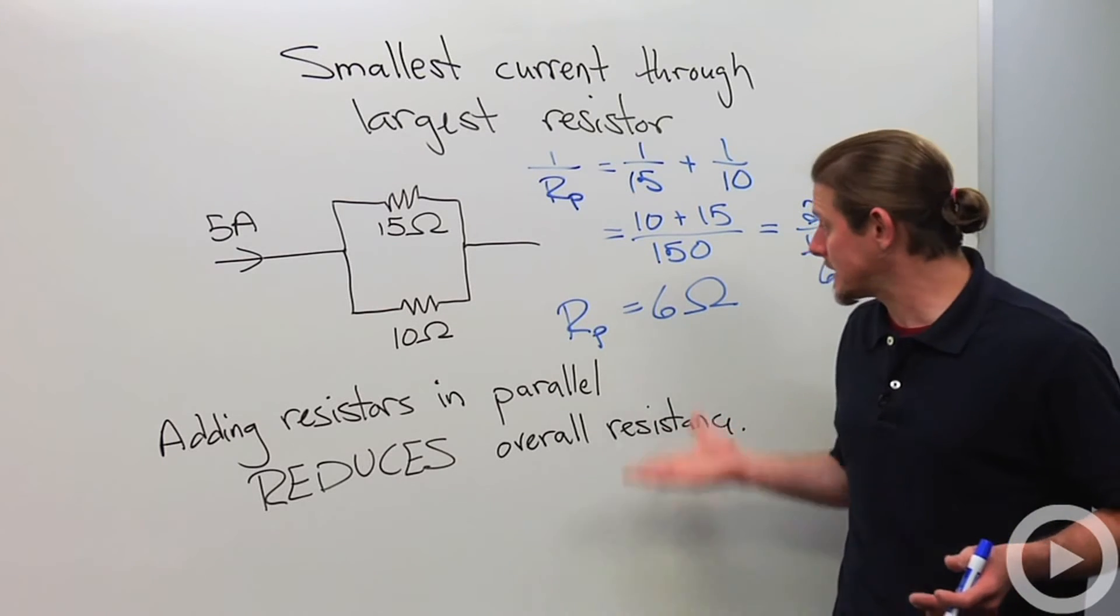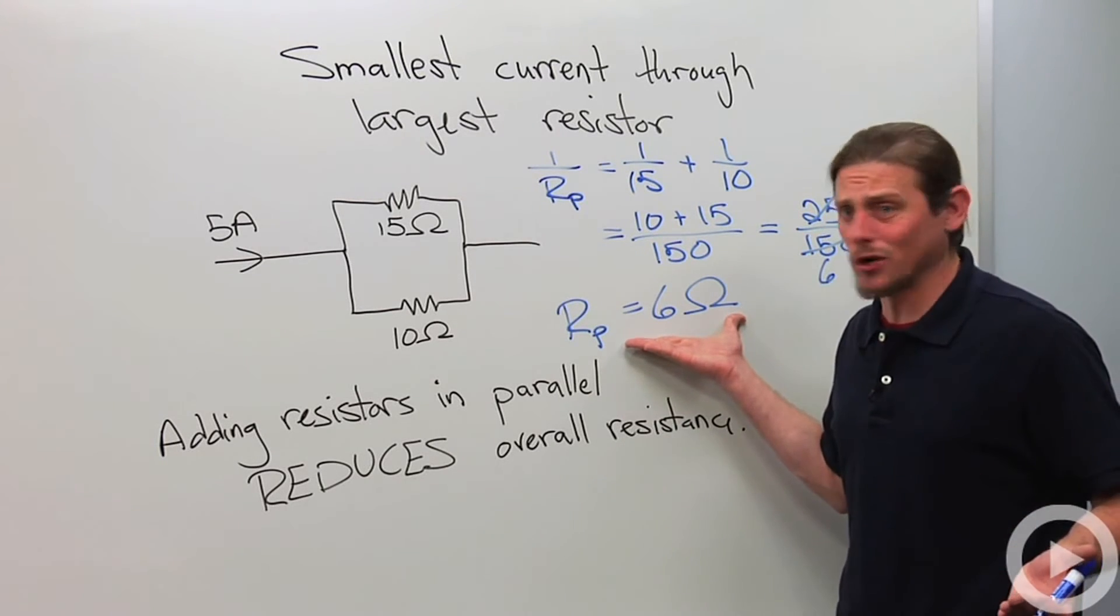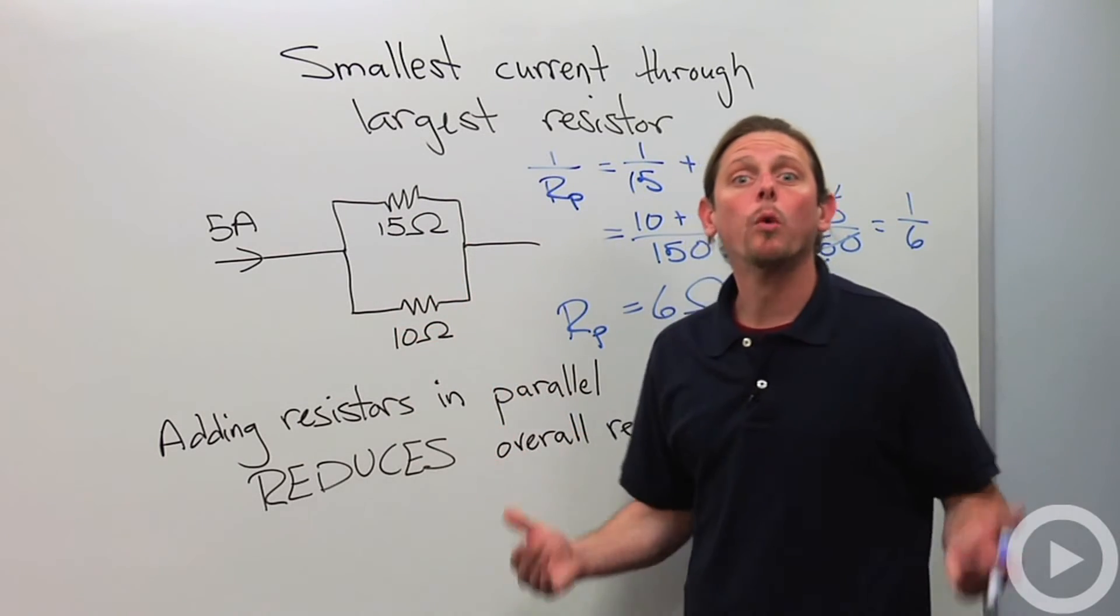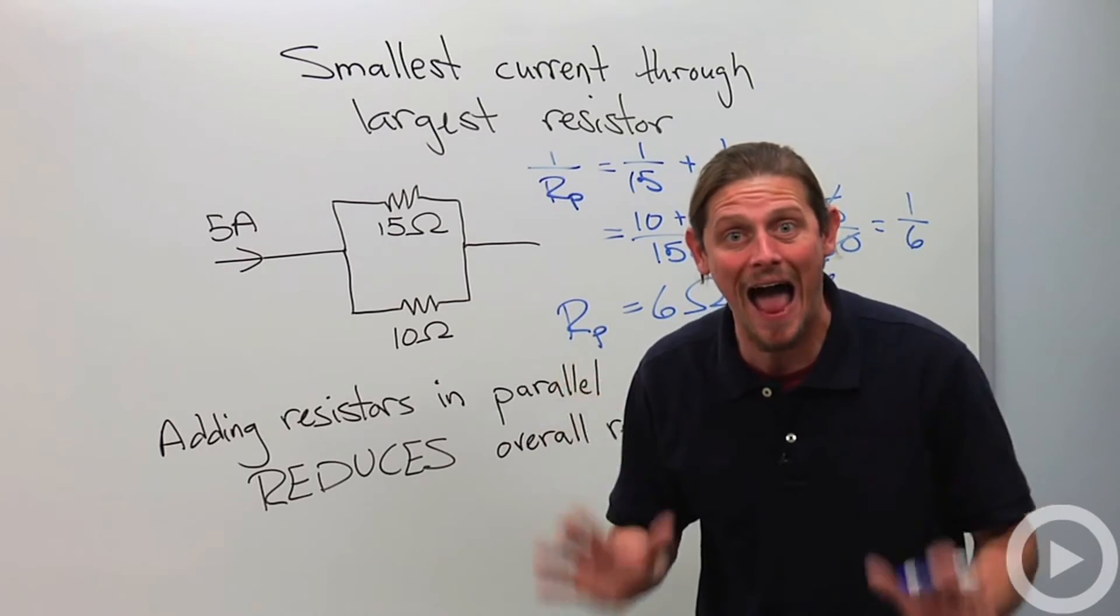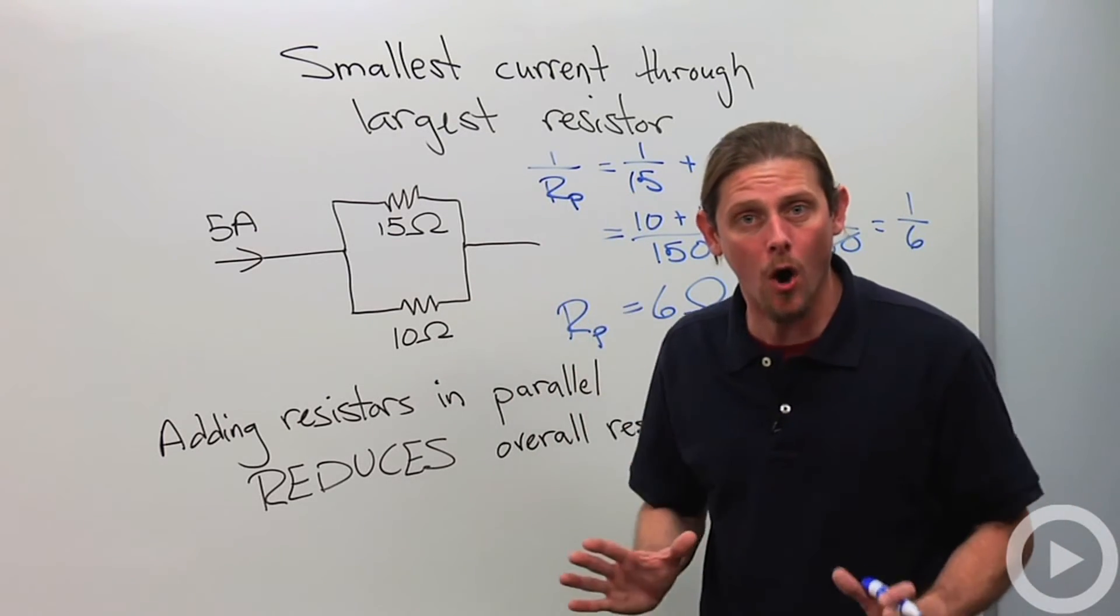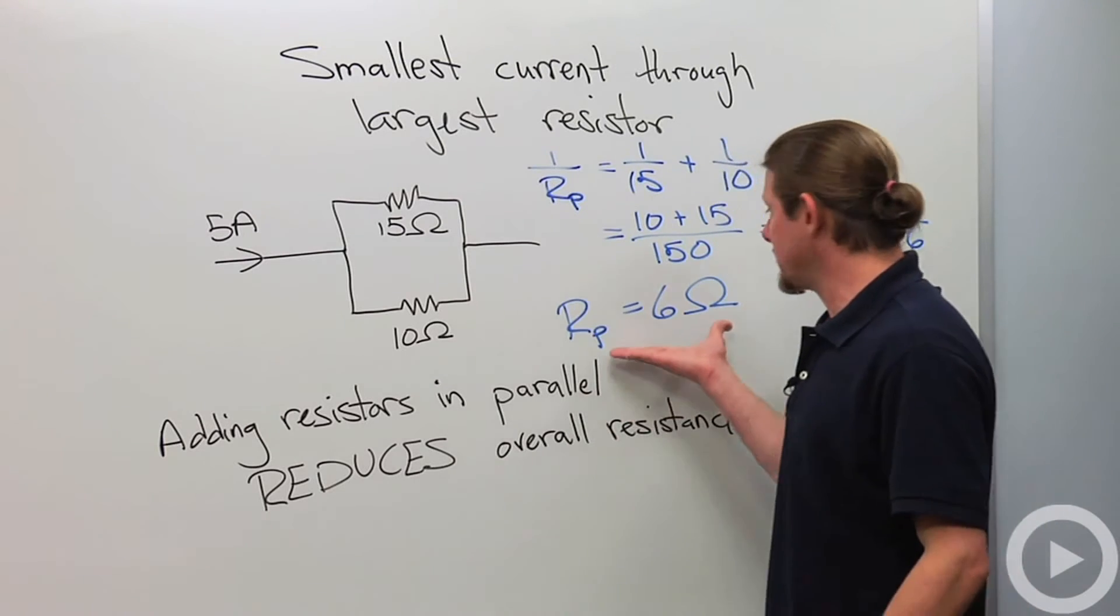So now that we've got the effective resistance, how are we going to determine the current through each of these guys? Well, we're going to use the idea that the potential difference has to be the same in parallel. Always, always, always, always.